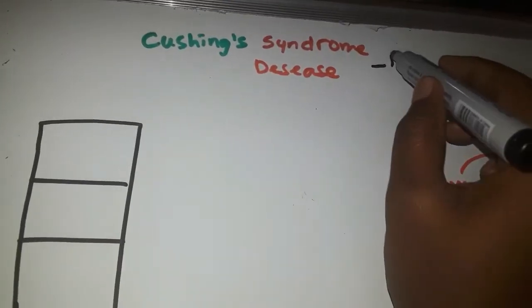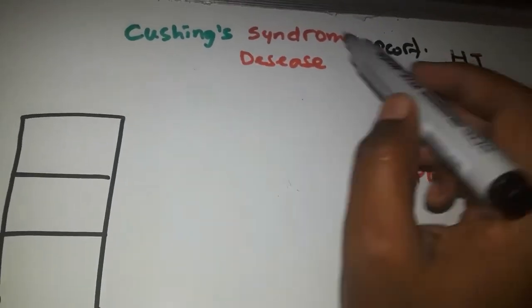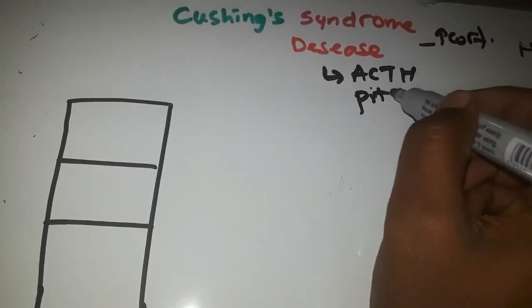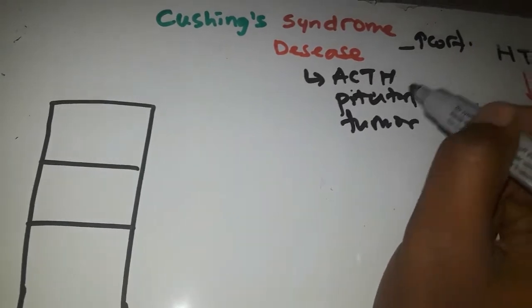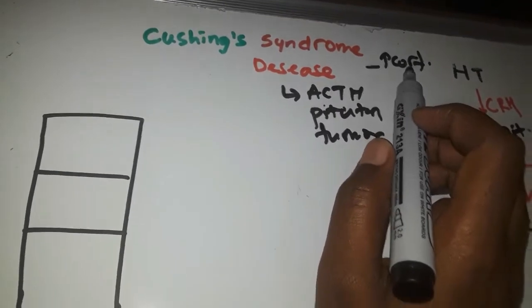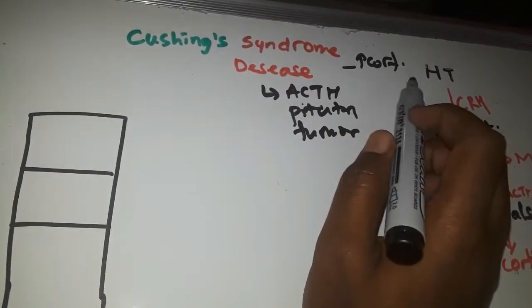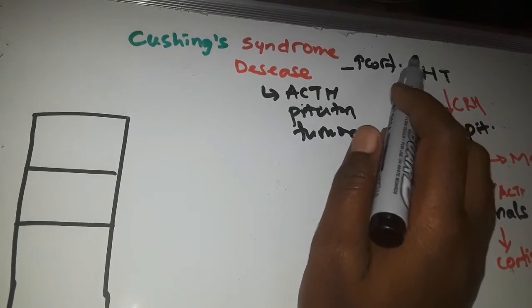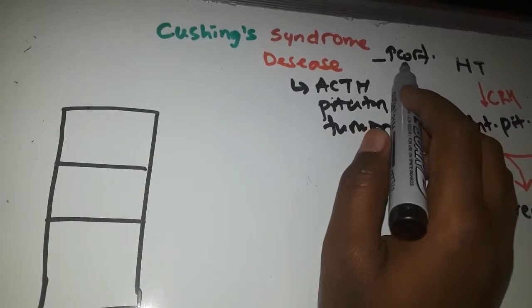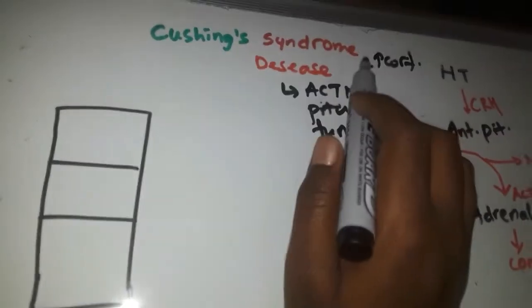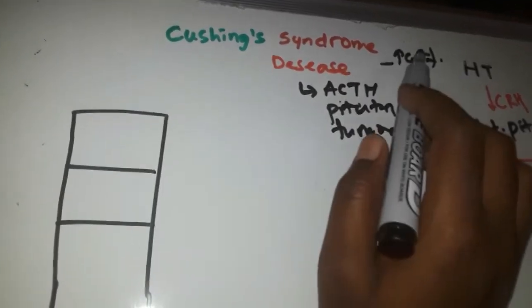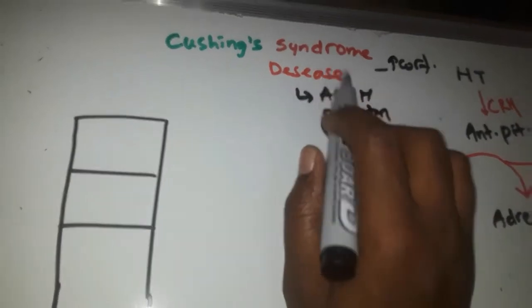Cushing's syndrome refers to clinical symptoms caused by increased cortisol in our body. Cushing's disease is an ACTH-secreting pituitary tumor. So when you have a tumor in your pituitary that creates adrenocorticotropic hormone, it's called Cushing's disease. Cushing's disease can be a cause of Cushing's syndrome, but it's not the only cause — Cushing's syndrome is a broader topic.